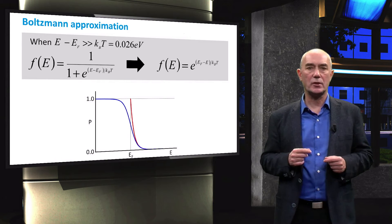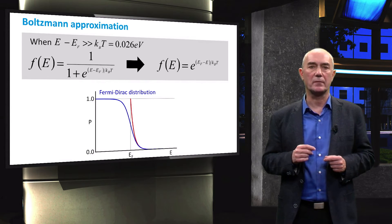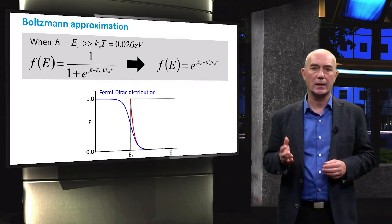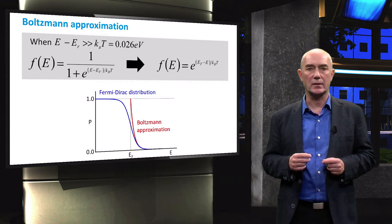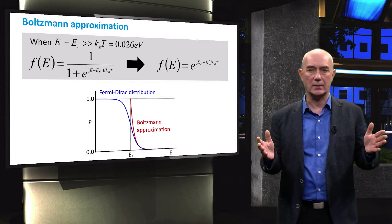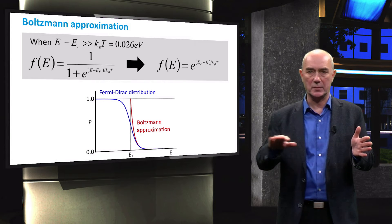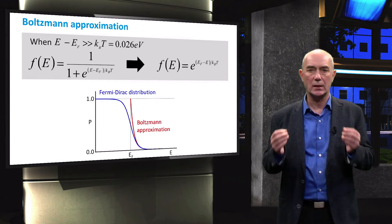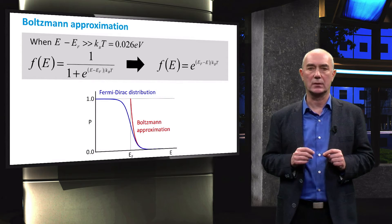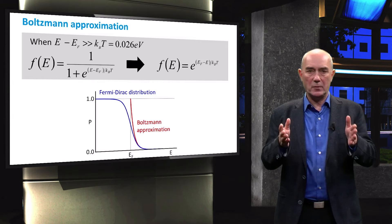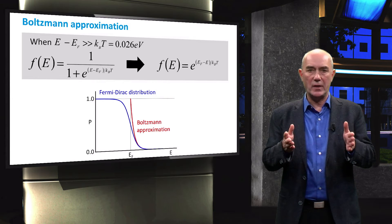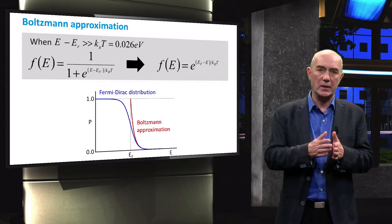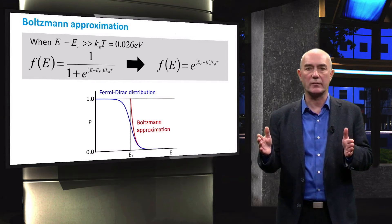This figure shows the Fermi-Dirac distribution function as the blue line and the Boltzmann function as the red line. The horizontal axis is the energy of a quantum state and the vertical axis is the probability of an energy state being occupied by an electron. From this figure we can see the range of energies over which the Boltzmann approximation is valid.